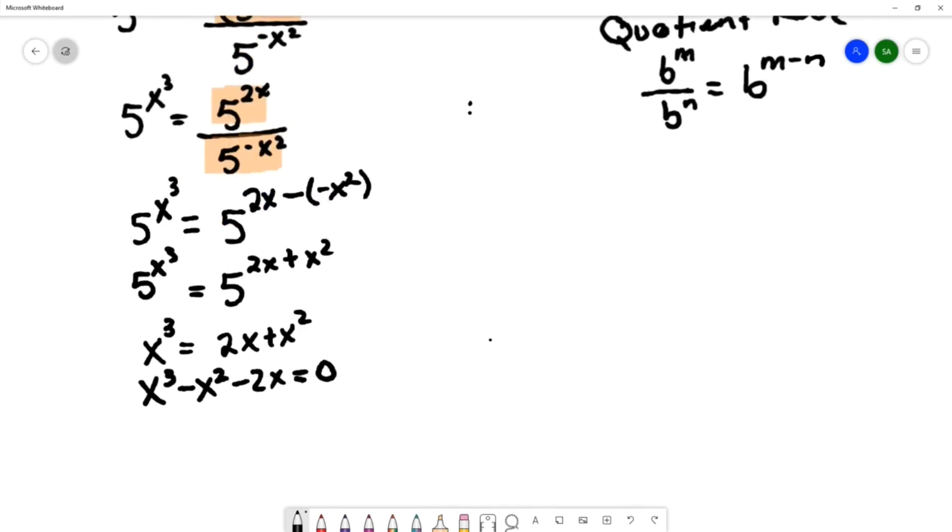I'll start factoring the greatest common factor of x. I factor out that x. I'm left with x squared minus x minus 2 equals 0.